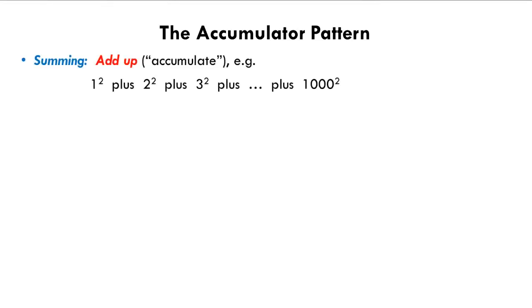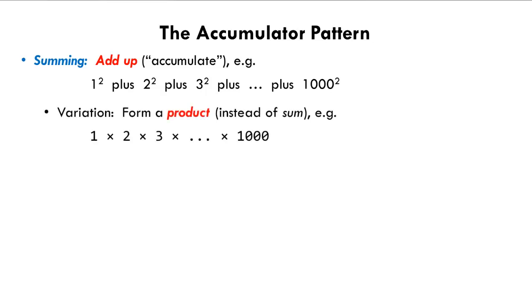In this lesson, we will continue to study the accumulator pattern that shows up in many guises. We have already seen it in its summing form, for example to add up, that is to accumulate, 1 squared plus 2 squared plus 3 squared and so forth through 1000 squared. An interesting variation is to form a product instead of a sum, for example to compute n factorial.